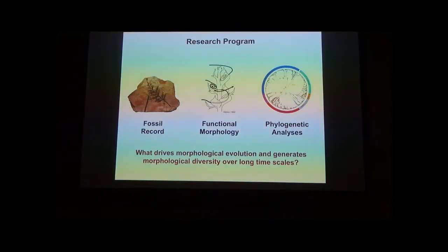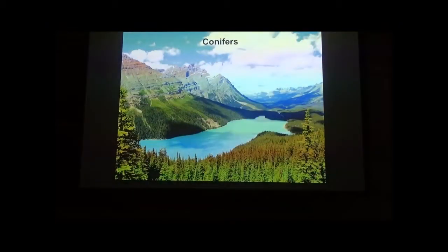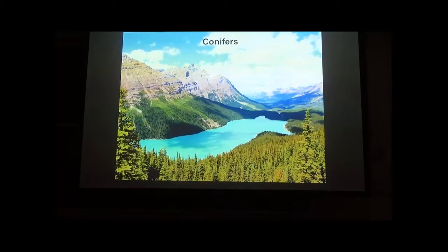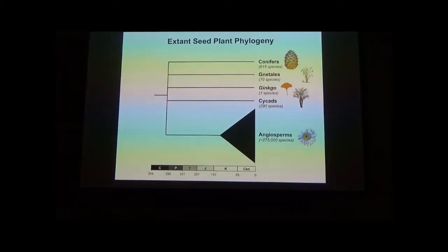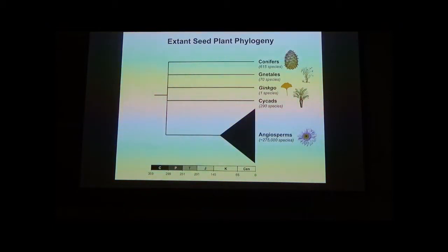I'll be talking about conifers tonight. We often think of conifers as characteristic trees of boreal forests and mountain environments, but conifers are actually more diverse in terms of species richness in the tropics and subtropics. Conifers are one of five major seed plant lineages still extant—conifers, gnetales, ginkgo, about 300 cycads, and the angiosperms. These five lineages are the remains of more than 20 major lineages that used to exist in seed plant evolution, and conifers are the most diverse of these non-flowering seed plant groups.